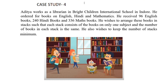Aditya works as a librarian in Bright Children International School in Indore. He ordered books on English, Hindi, and Mathematics. He received 96 English books, 240 Hindi books, and 336 Maths books. He wishes to arrange these books in stacks such that each stack consists of books on only one subject and the number of books in each stack is the same. He also wishes to keep the number of stacks minimum.